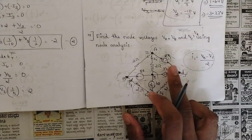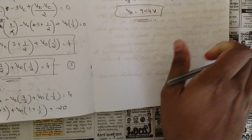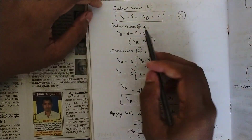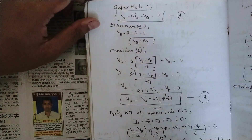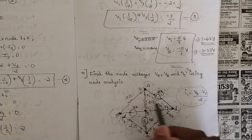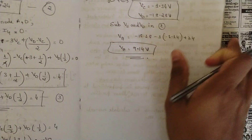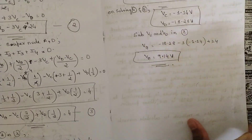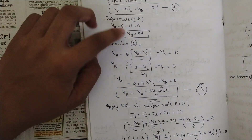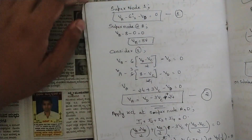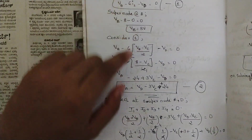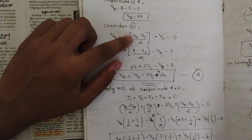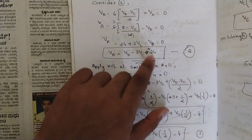I1 is a current-controlled voltage source; I1 = (Vb - Vc) / 2 (the resistor in that branch). Write the super node equation: Va - 6·I1 - Vd = 0. For the super node at B: Vb - 8 = 0, so Vb = 8 volts. Substituting I1 and Vb = 8 into the first equation, we get Va = Vd - 3Vc + 24, named Equation 2.